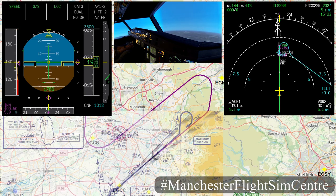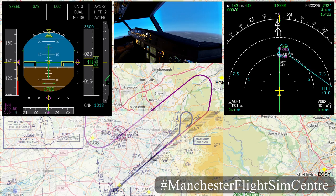Landing checks: Cabin secure, auto-thrust, speed. Go-around altitude 3,500 feet set. ECAM memo landing — no blue. Landing checklist complete.